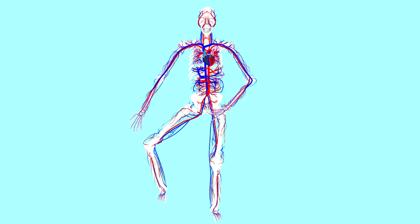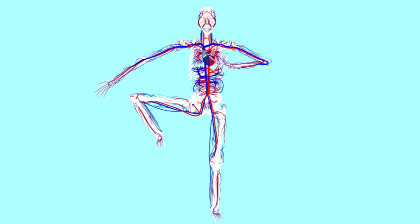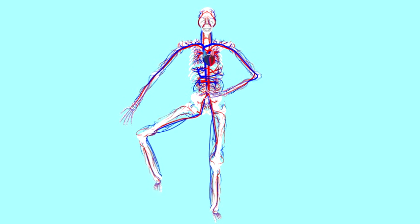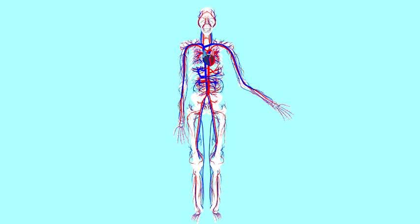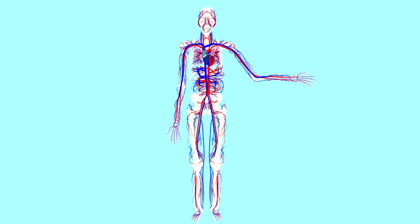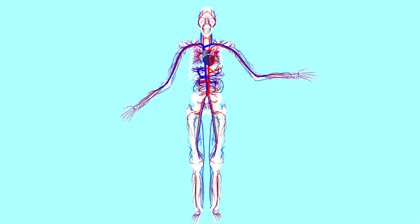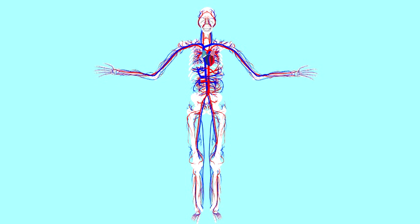One of the most important functions of the cardiovascular system is that of transport. The body's cells very often produce things which are required elsewhere in the body or require things which are made elsewhere in the body.